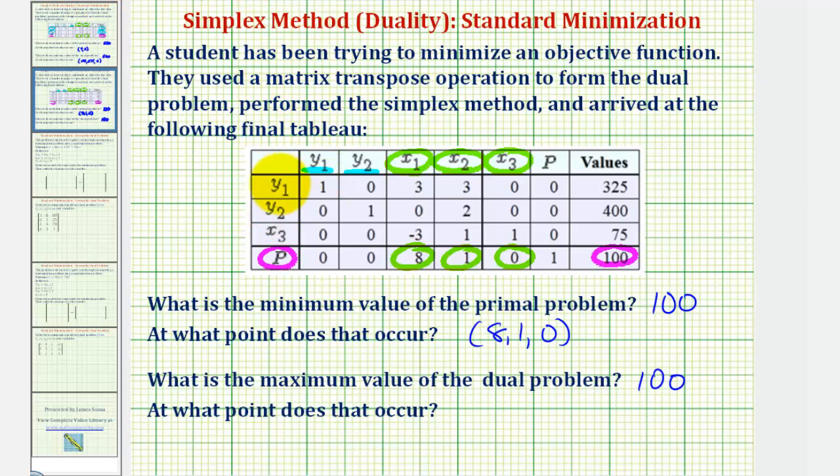So 1y sub 1 or y sub 1 equals 325. 1y sub 2 or y sub 2 equals 400. And this is really all that we need,